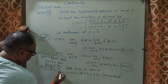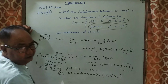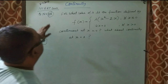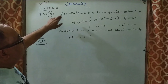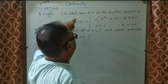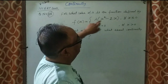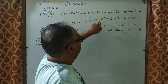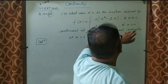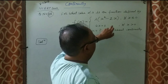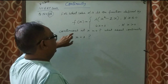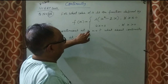That is the answer to Question 17 — a very important question. Now Question 18: For what value of λ is the function defined by f(x) = λ(x² − 2x) if x ≤ 0, and f(x) = 4x + 1 if x > 0, continuous at x = 0?